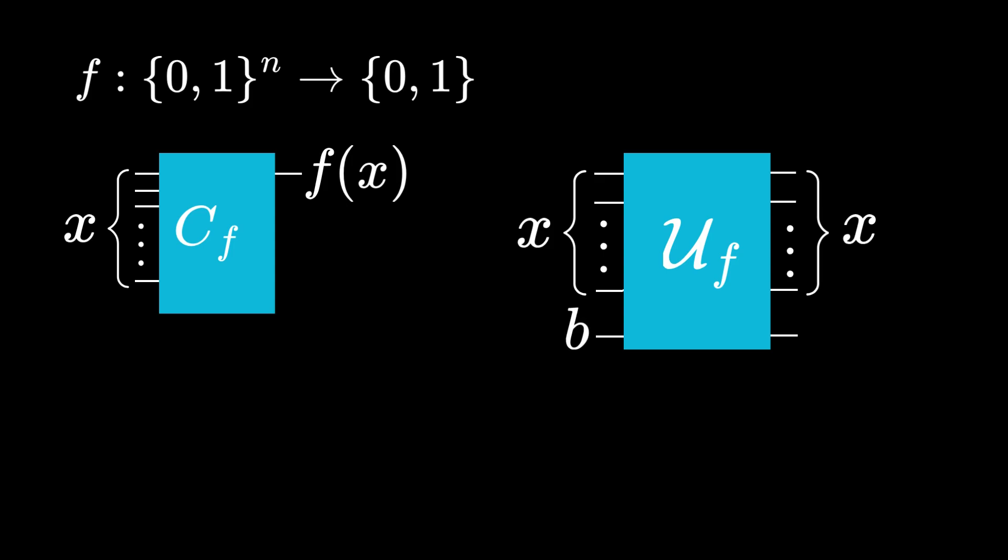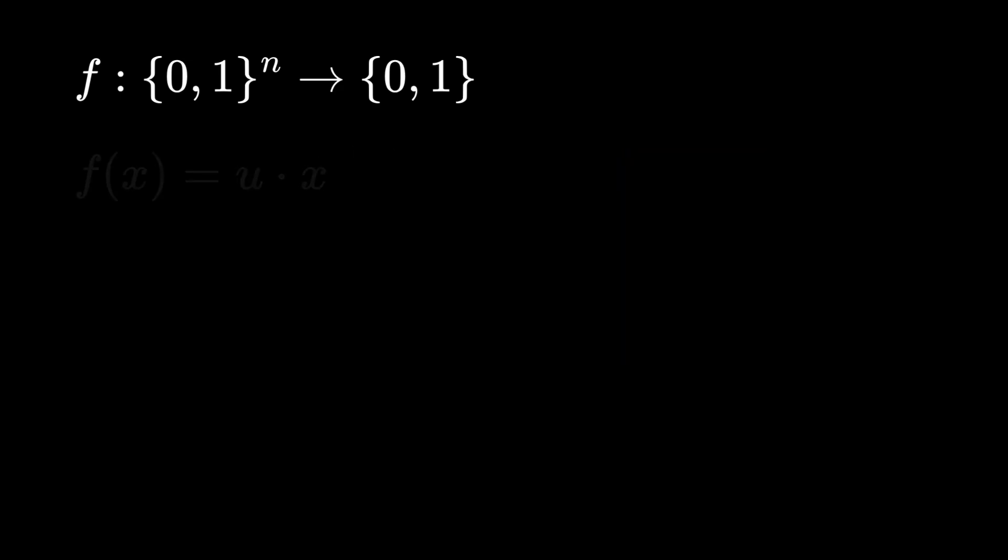The input here has a specific form. On the first n registers, we encode x, the input to the function f, and on the last register, we have a qubit b. The output of the last register is the binary sum of b and f(x). Suppose this function has a specific functionality.